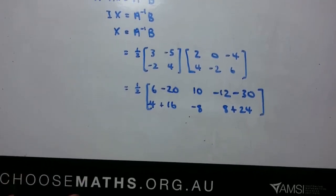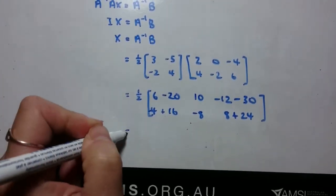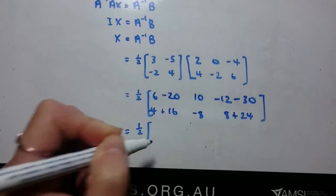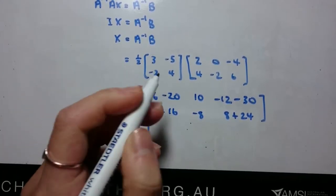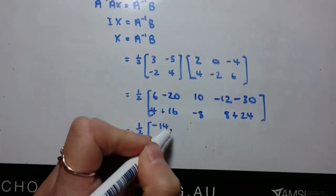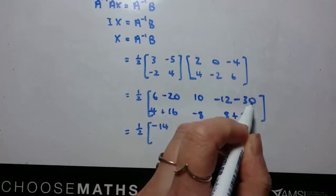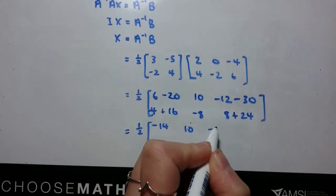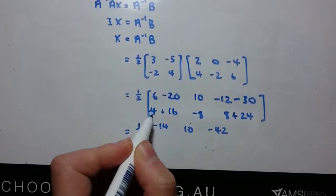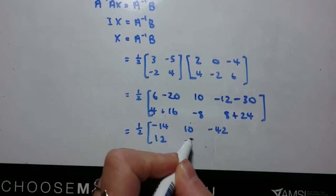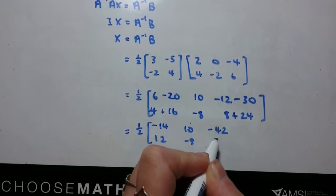Let's move this up so we can see. Let's clean this up inside. So 6 take 20 is negative 14, we've got 10, negative 12 take 30 is negative 42. Negative 4 plus 16, 12, negative 8 and 32.